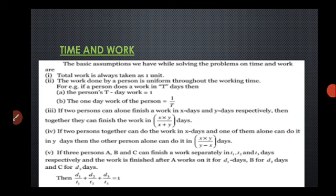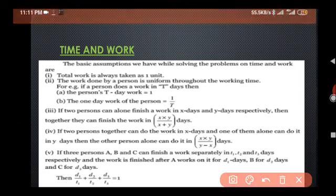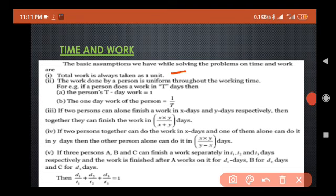Next is time and work. The basic assumptions we have while solving problems on time and work are: the total work is always taken as one unit. Next, the work done by a person is uniform throughout the working time. For example, if a person A works in T days, then person's T day work is equal to one, that work is completed. Then the work done in one day will be 1/T. If two persons can alone finish a work in X days and Y days separately, then together they can finish the work in XY/(X+Y) days.